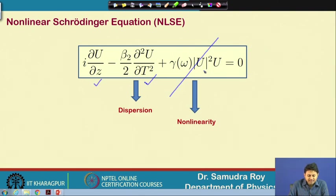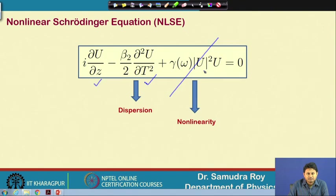If you tally these two equations side by side, you will find that both first-order and second-order derivatives are present in the nonlinear Schrödinger equation in optics — the same as in quantum mechanics — but there is an additional term here which is nonlinear in nature, essentially a nonlinear potential term in quantum mechanical terms.